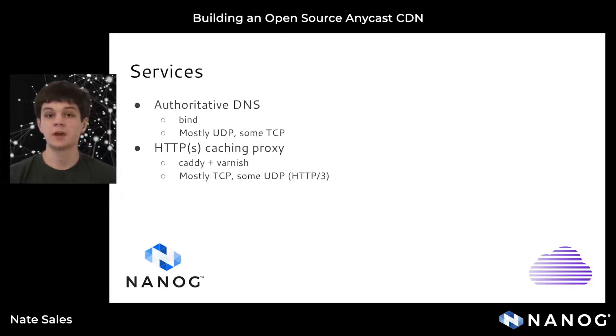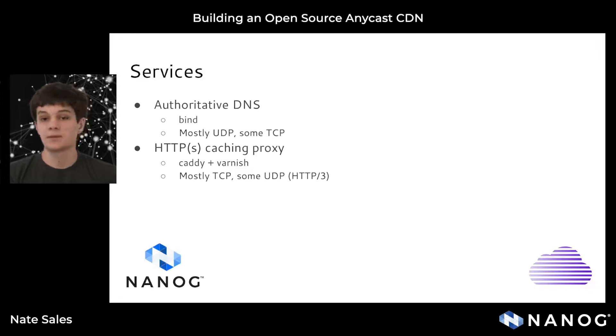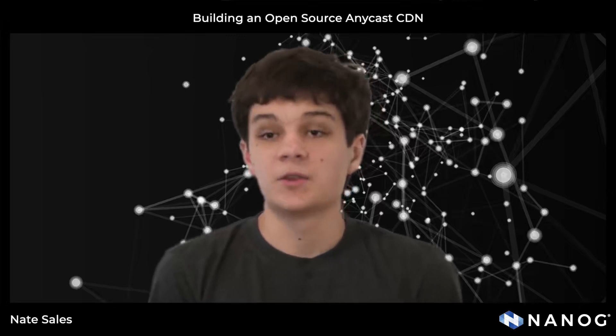I knew from the start that I wanted to run authoritative DNS, so I set up a couple of BIND instances with Anycast addresses. DNS is mostly a UDP service, with some TCP for things like zone transfers. This makes it very simple for Anycast, because there are no issues with TCP state synchronization. One of the problems with Anycast is that TCP state can become out of sync — if a packet goes to one server and the ACK arrives at a different server, you get a reset and the connection drops. That's not a problem with UDP, because there's no state.